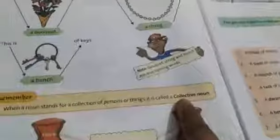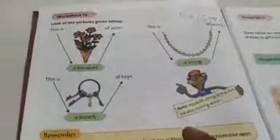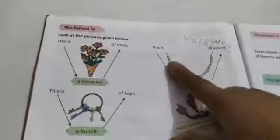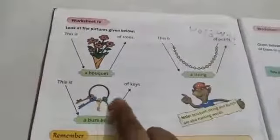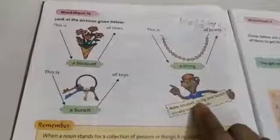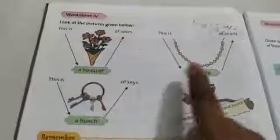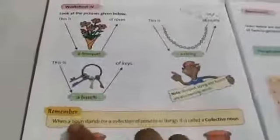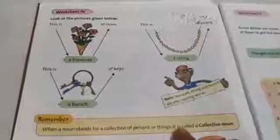Now come to worksheet number 4 — here we will study the collective noun. The collection of persons and things. For example, rose — collection of roses is called a bouquet. This is pearls — collection of pearls is a string of pearls. This is keys — collection of keys is called a bunch of keys. So bouquet, string, bunch — these are also naming words. When a noun stands for the collection of people and things, it is called a collective noun. All these are collective nouns.